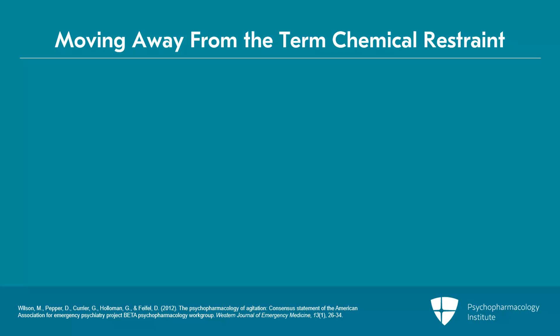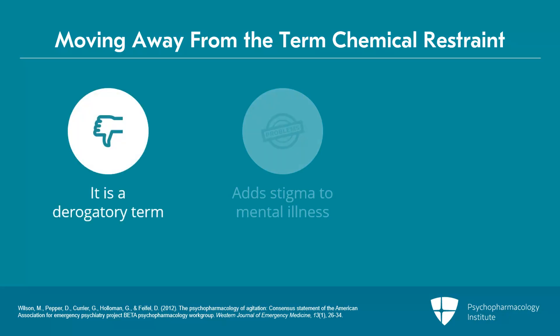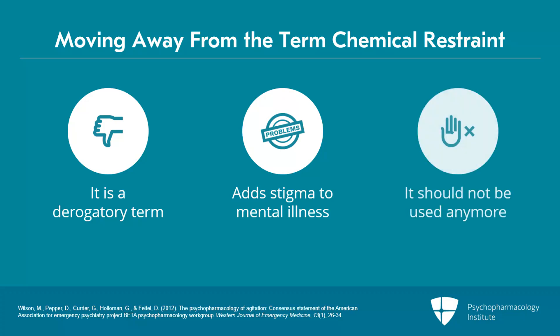We should throw that term out because it's a little bit derogatory. When we think about the stigma of mental illness, how many conditions do we say 'let's give that person chemicals'? We don't chemically treat a diabetic patient. We don't chemically treat the person with asthma — we give them medications. Well, we're giving medications to people with agitation as well, and that's the way we should look at it. We're treating a condition of agitation; we're not chemically restraining anybody. We need to get that out of our lexicon and not use it anymore.